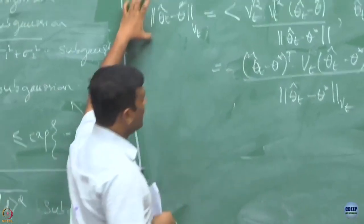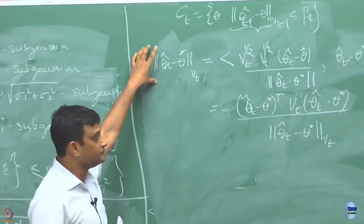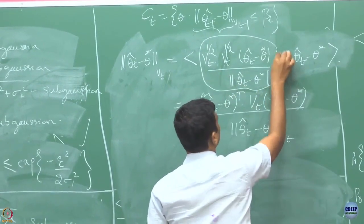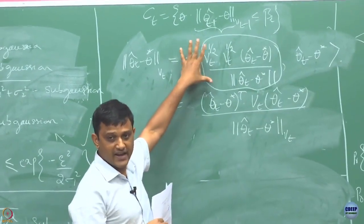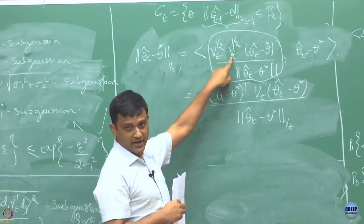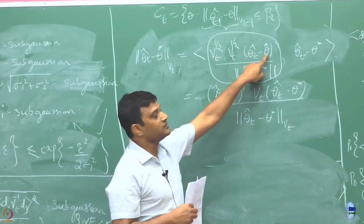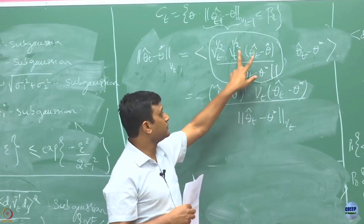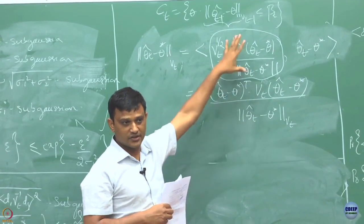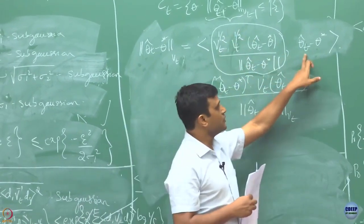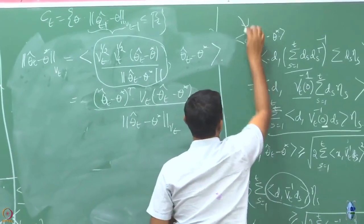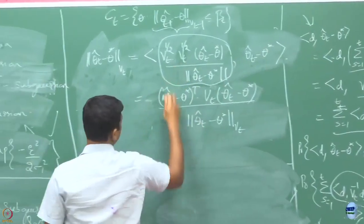Now you see that this quantity I have expressed here is basically a matrix product — this is a matrix, and this is a vector. This product gives you a vector, and this denominator is some constant. So this quantity is a vector, and you are looking at it in a product with this quantity. It is similar to what I was doing here, but instead of D I have replaced it by this entire quantity.